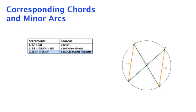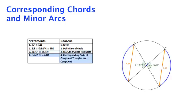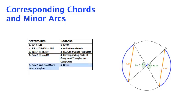And then, using CPCTC, we know that these angles are congruent. And since they are the central angles of the arcs, that makes the minor arcs congruent.